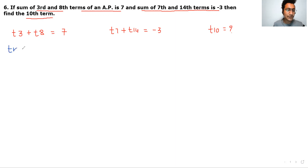To solve this, apply the TN formula: TN is equal to A plus N minus 1 multiplied with D.